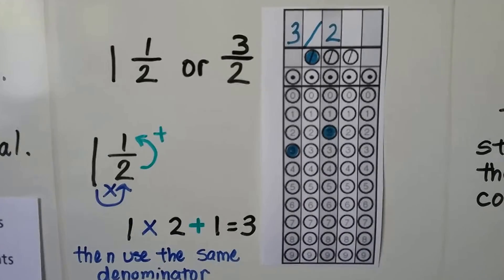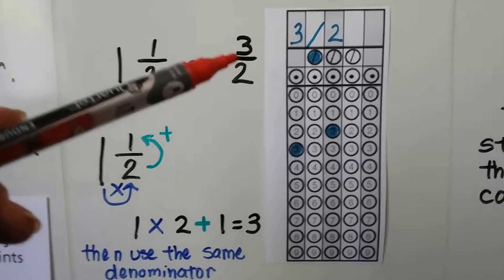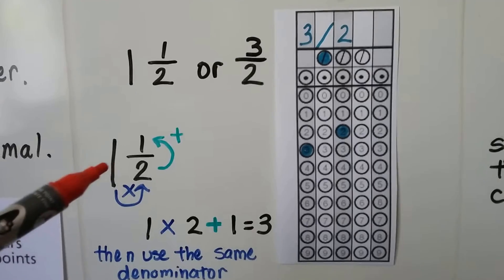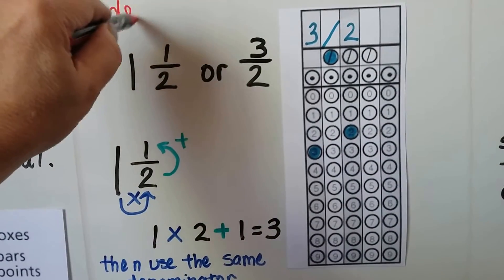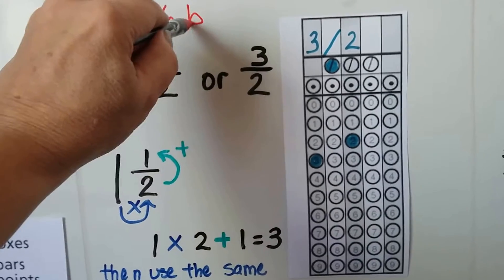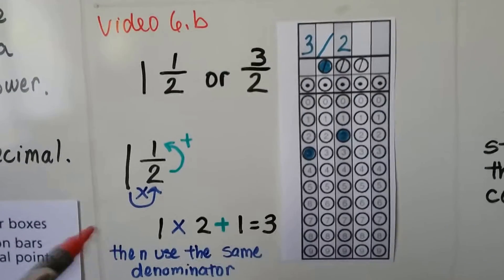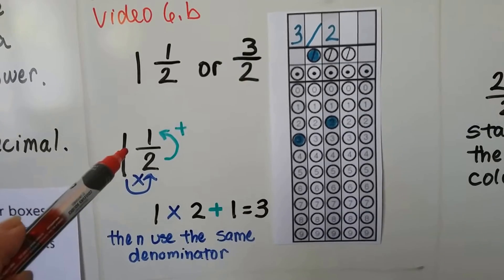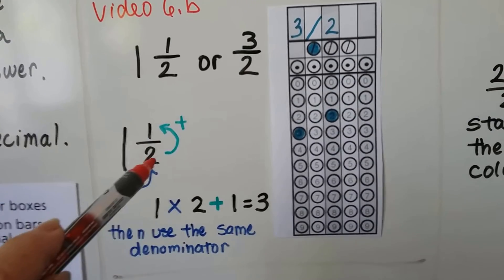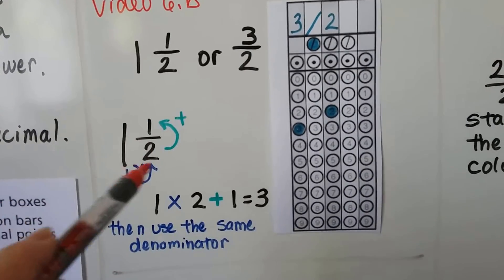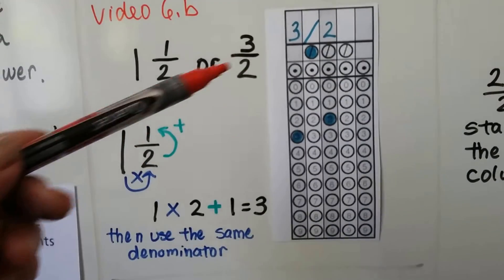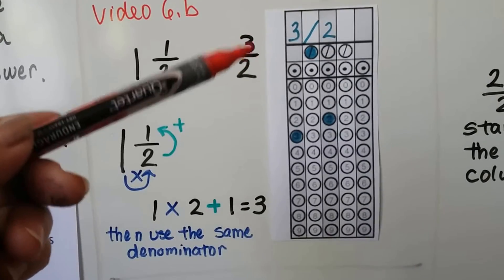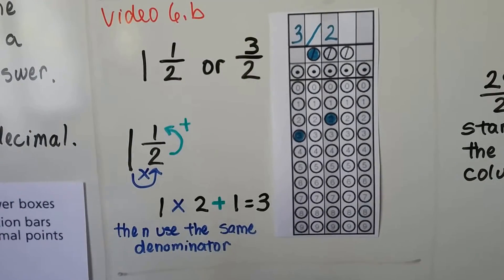If our answer is one and a half, which is the same thing as three halves. And if you remember from video 6B, there's a link in this description to that. When we reduced fractions, all we have to do is go counterclockwise. We go one times two plus the one. And that'll give us the improper fraction. If our answer is already an improper fraction, then don't reduce it. Just leave it like this and fill it in.